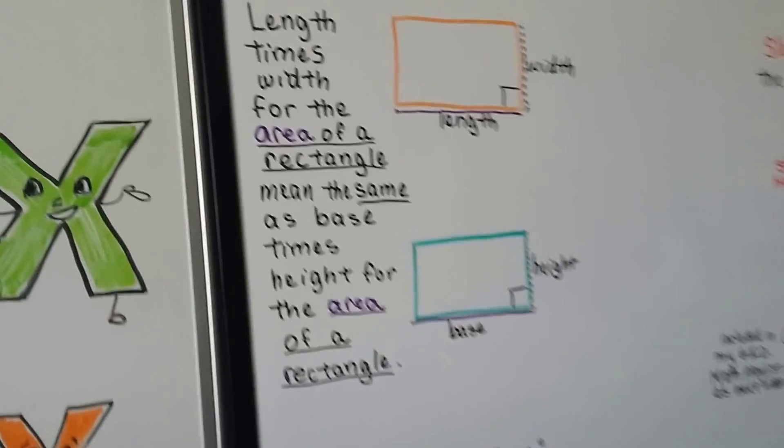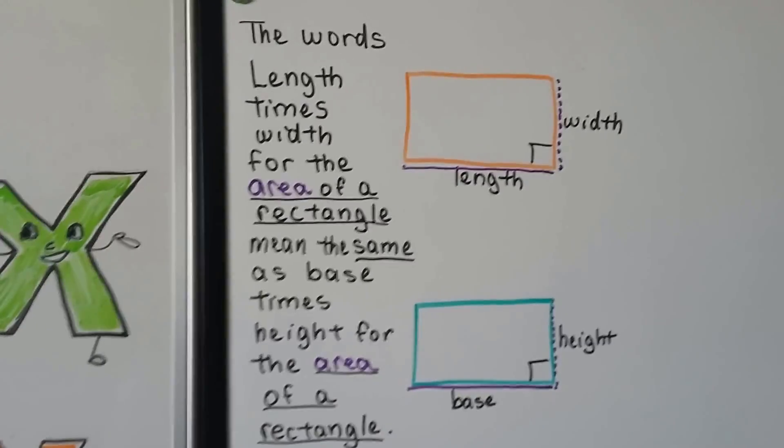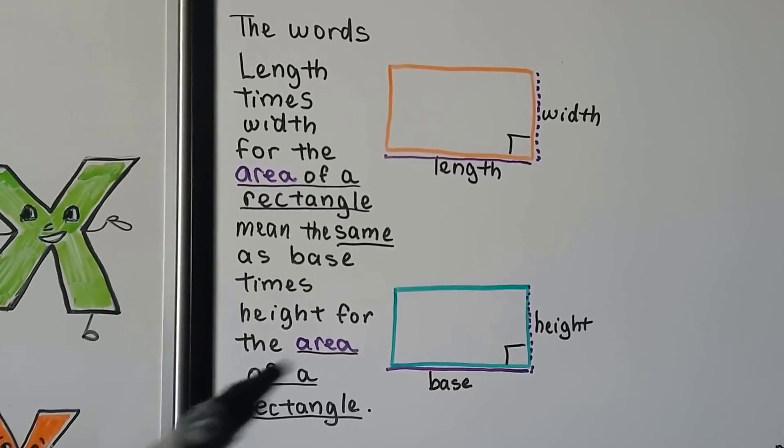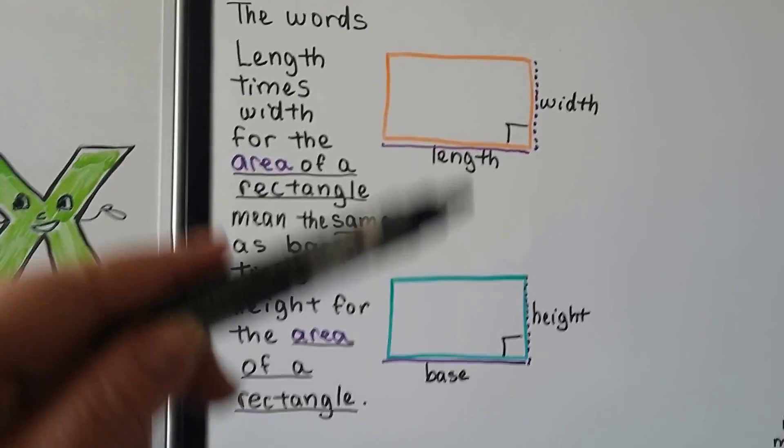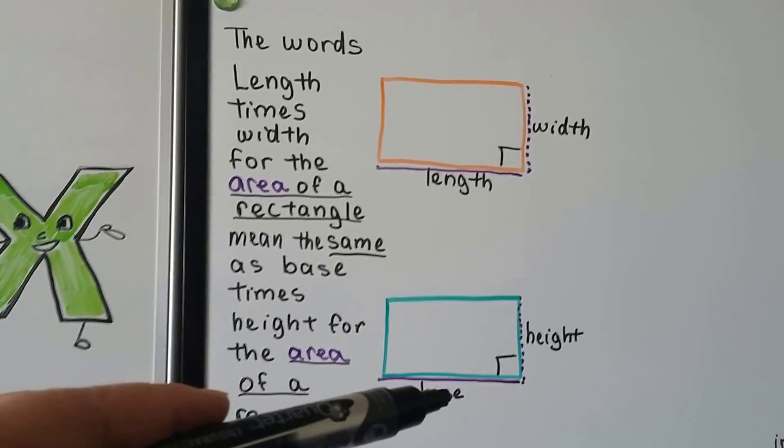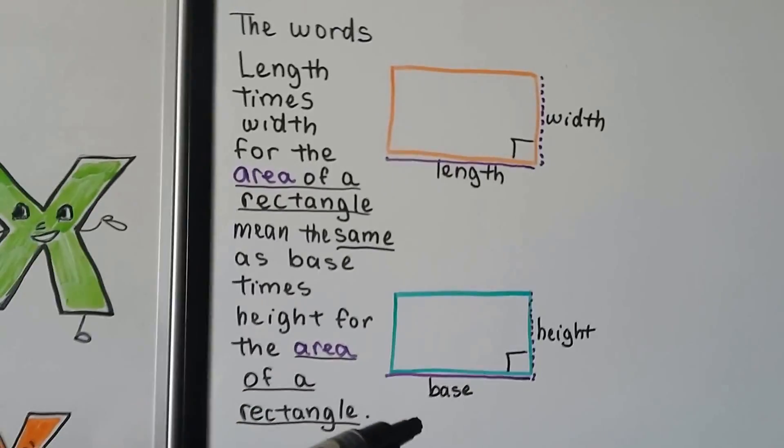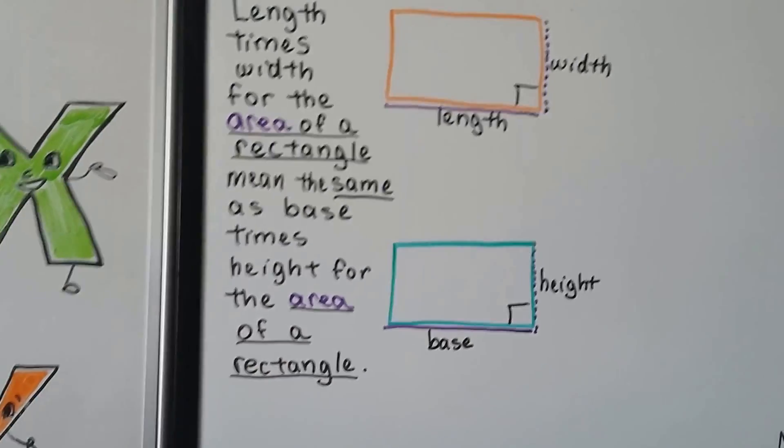The words length times width for the area of a rectangle means the same thing as base times height for the area of a rectangle. We're not talking about a parallelogram. I'm just saying if you wanted to look at these as two rectangles, the width and the length of this would be equivalent to the height and the base because we have 90 degree angles there.